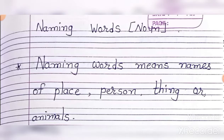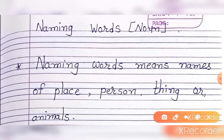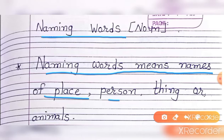Noun is called naming words — names of place, person, thing, and animals. Naming words.